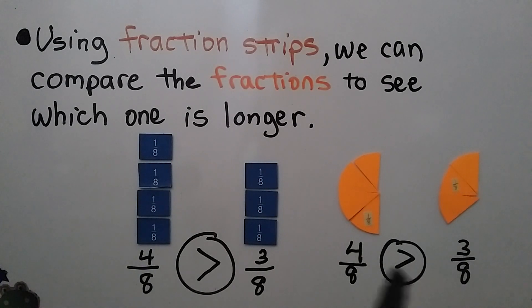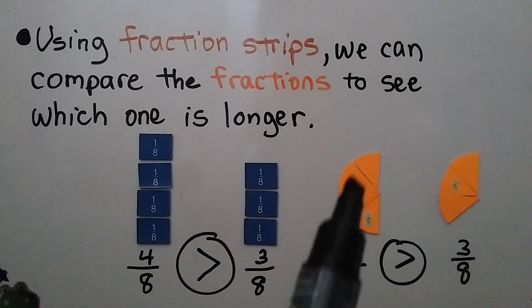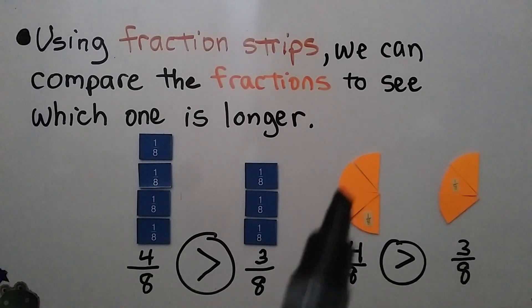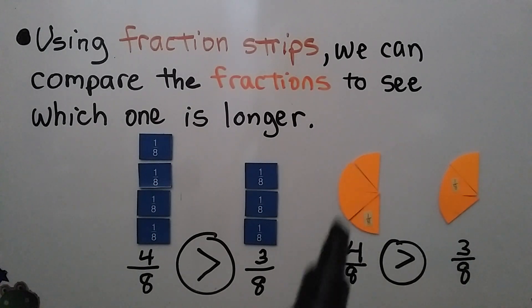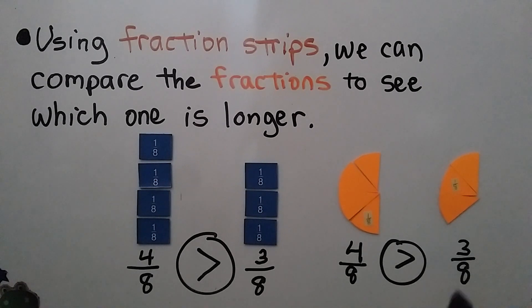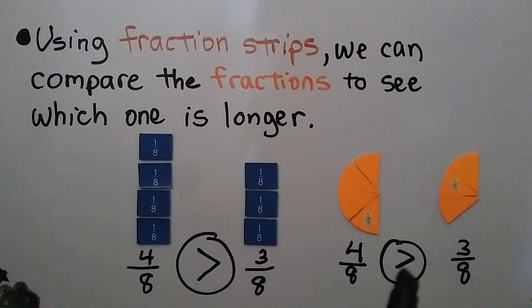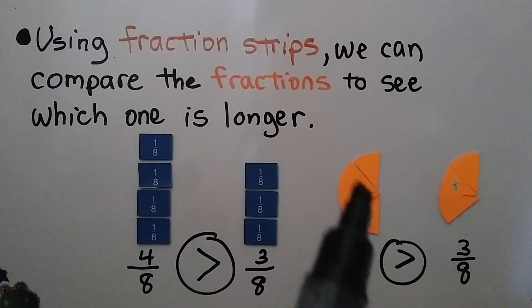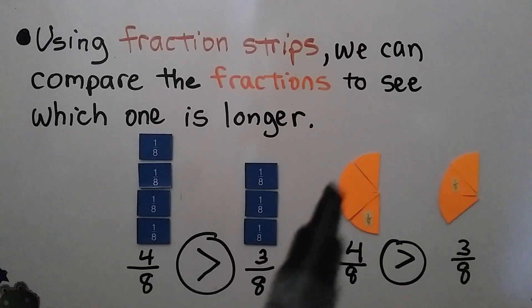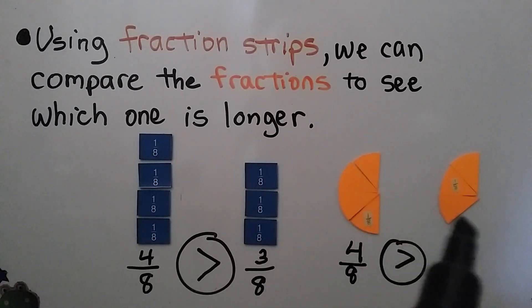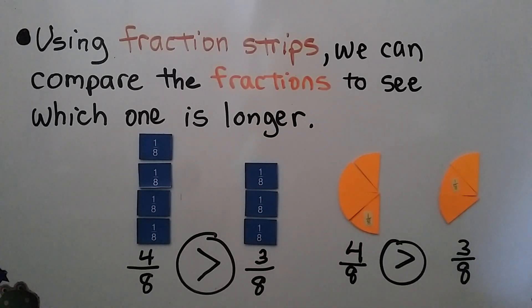Using a fraction circle, we have 4 one-eighth pieces, like slices of a pie. Here we have 3 one-eighth pieces. 4 eighths is greater than 3 eighths — we can see this is more than this. It's greater.